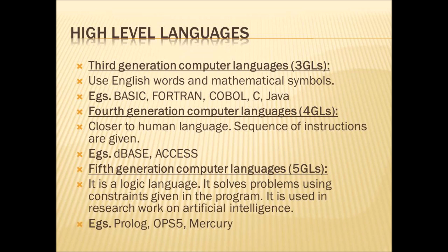High-level languages have three generations. Third generation computer languages (3GL) use English words and mathematical symbols to give instructions. Examples include BASIC, Fortran, COBOL, C, and Java.